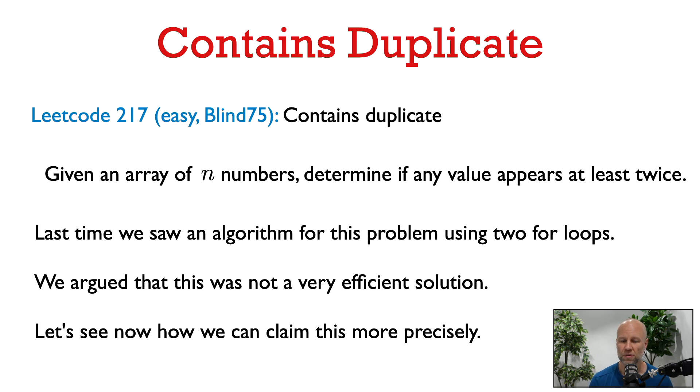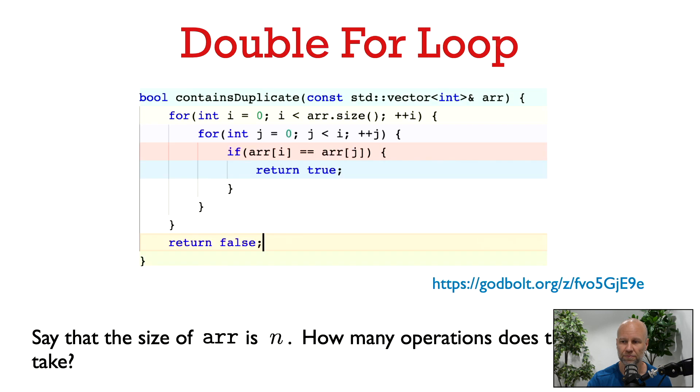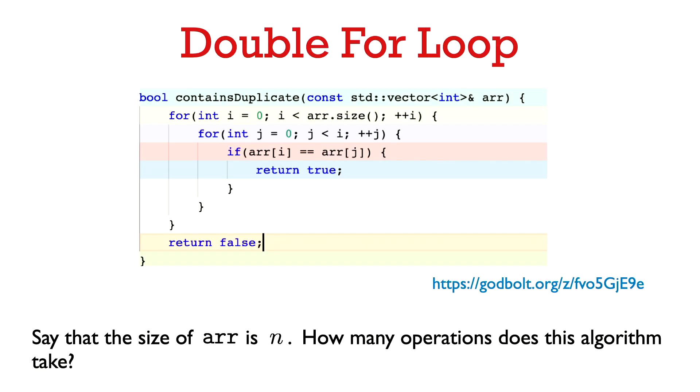Let's go back to the double-for-loop solution to the contains-duplicate problem. In this solution, we iterated over each element ai of the array, and then to check if we had previously seen ai, we iterated over the array from 0 to i-1 to check if any of those elements were equal to ai. Our intuition is that this algorithm is wasteful, and there should be a better way. Now let's see how we can argue this more rigorously.